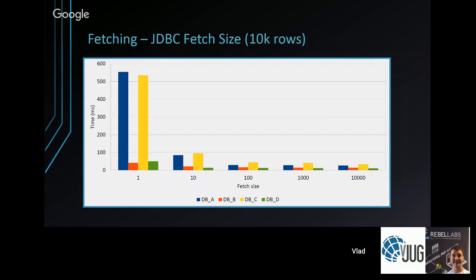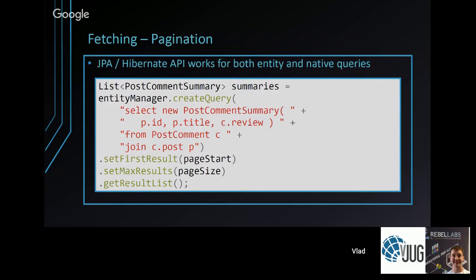This graph shows how long it takes to materialize a result set as you vary the fetch size from 1 to 10,000. With a fetch size of 1, a 10,000-row result set requires 10,000 round trips. Between 10 and 100 you see a significant gain, so increasing the Oracle default of 10 is worthwhile.